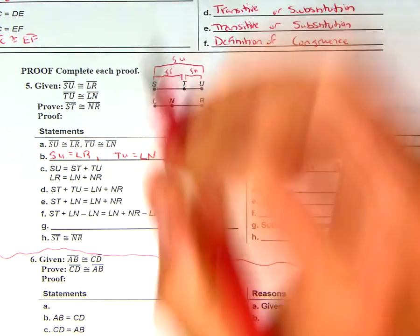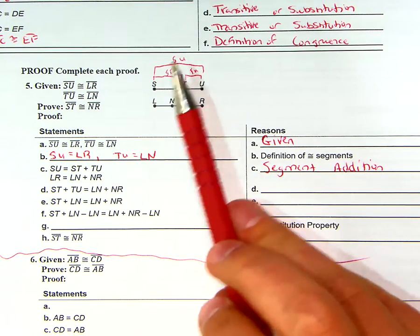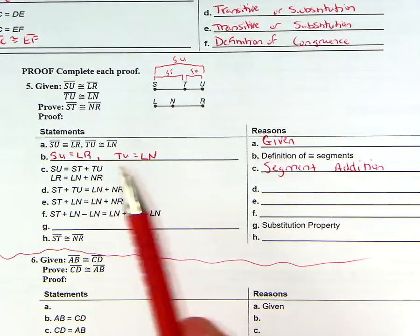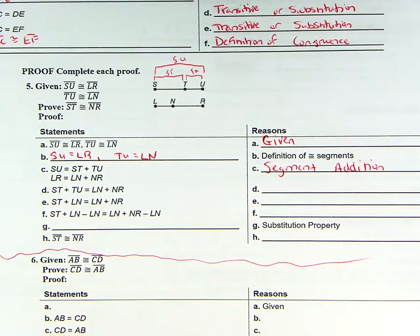Here's ST, here's TU. So ST plus TU equals all of SU. That's from segment addition, the segment addition postulate. We can use that, so that's where you would use this.